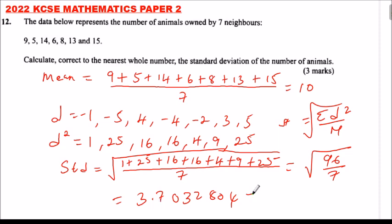But you are told, correct to the nearest whole number. So we say it is approximately 4. The standard deviation of the number of animals is around about 4.